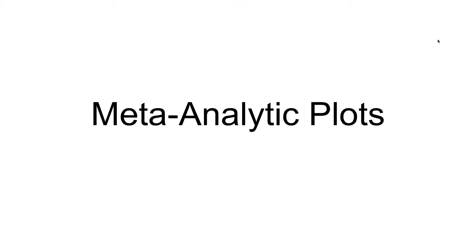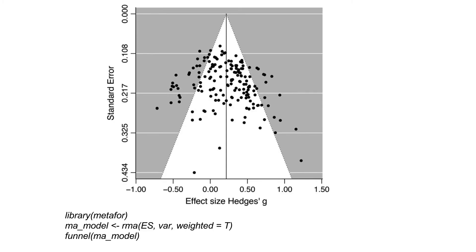Some of your plots may be about reproducibility while others may try to show trends in the data related to specific predictors. For reproducibility, you may for example make a funnel plot. Funnel plots depict standard error of the effect size as a function of effect size. The smaller the error, the closer the effect size is expected to be to the true population mean, and the larger the error, the further away from the population mean an effect size can be. This is represented by the wide funnel shape in the plot.